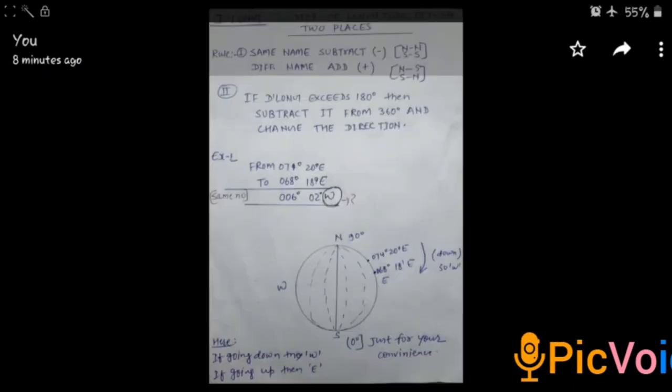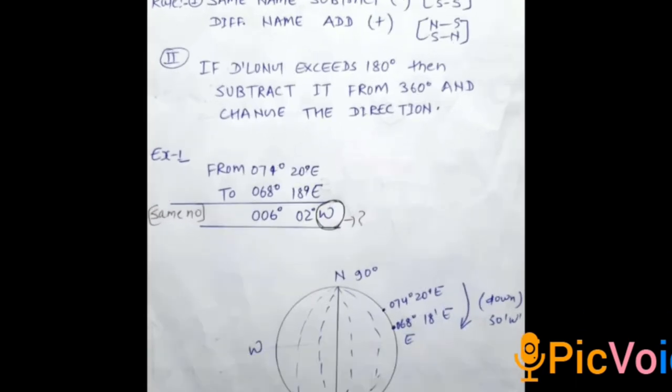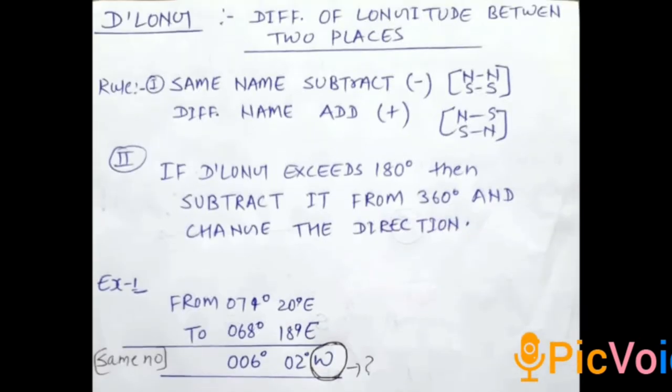Now moving to D-Long. D-Long is basically difference of longitude between two places. Here this rule remains the same: same name to be subtracted, different name to be added. And here one more rule will be added. If D-Long exceeds 180 degrees, then subtract it from 360 and reverse the direction.